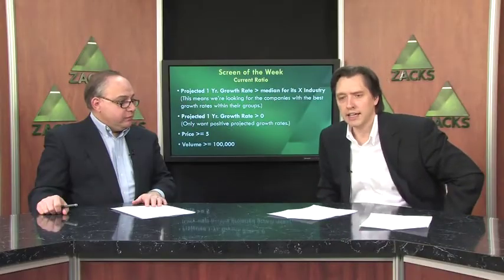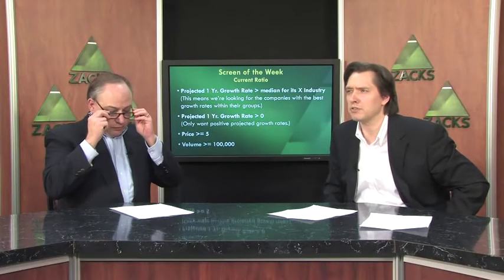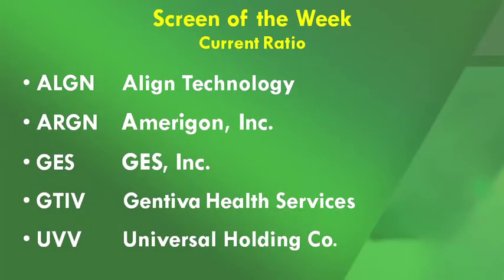About 40 stocks came through. Here are five of them: Align Technology, Amerigon, Guess, Gentiva Health Services, and Universal Holding. Medical is one of the best areas right now. These five companies all have a great Zacks rank, good growth rates, and very attractive financial positions.